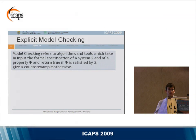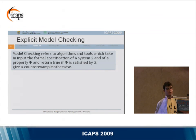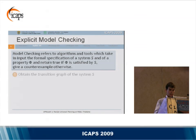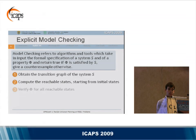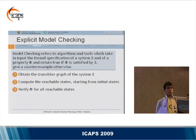Let me briefly describe explicit model checking. Model checking refers to algorithms and tools which take as input the formal specification of a system and of a property, and return true if the property is satisfied. Otherwise a counter-example is returned. An explicit model checking algorithm consists of three main steps: first, obtain the transition graph of the system; then compute the set of all reachable states starting from the initial ones; and for each reachable state check if the property is satisfied.